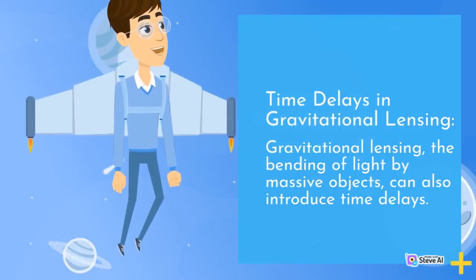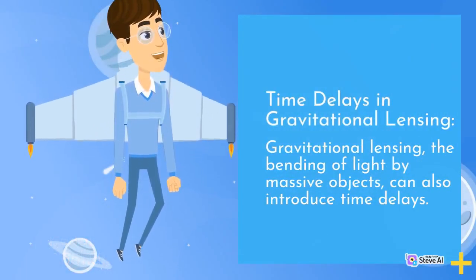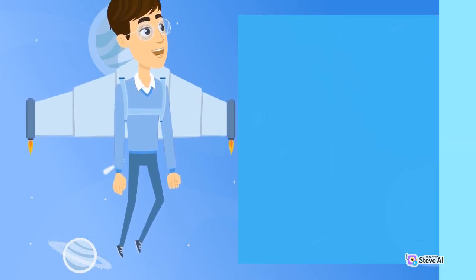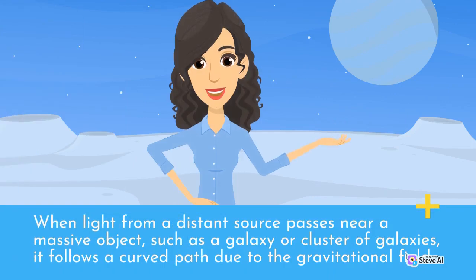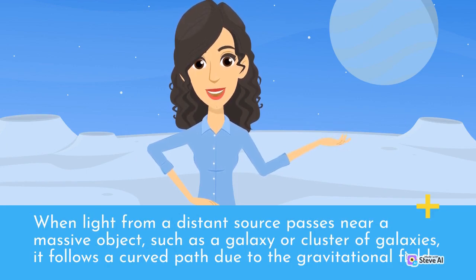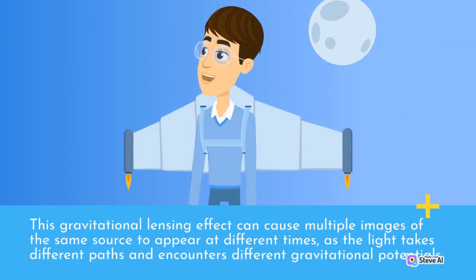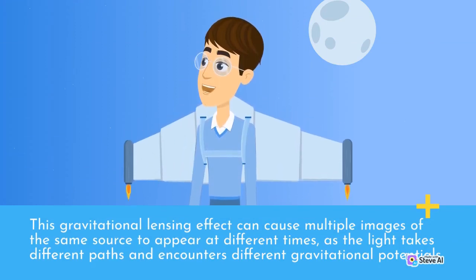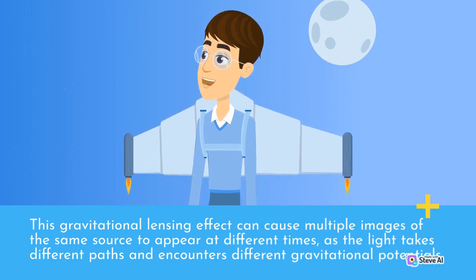Gravitational lensing, the bending of light by massive objects, can also introduce time delays. When light from a distant source passes near a massive object, such as a galaxy or cluster of galaxies, it follows a curved path due to the gravitational field. This gravitational lensing effect can cause multiple images of the same source to appear at different times, as the light takes different paths and encounters different gravitational potentials.